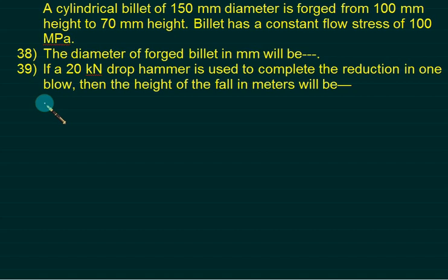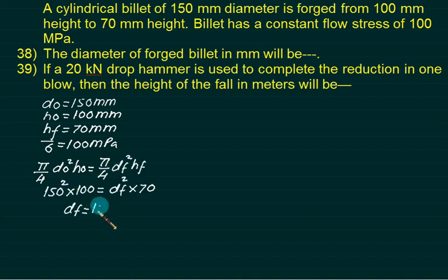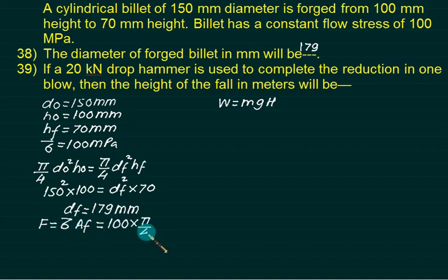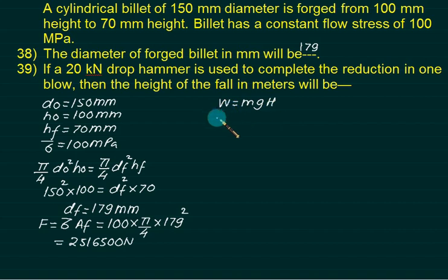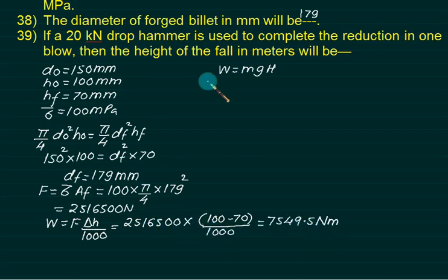Example 6: A cylindrical billet of D0 = 150 mm is forged from H0 = 100 mm to HF = 70 mm with average stress 100 MPa. Using volume conservation, DF = 179 mm. Force = 100 × (π/4 × 179²) = 2,516,500 N. Work done = F × ΔH = 2,516,500 × (30/1000) = 7,549.5 N·m. With a 20,000 N drop hammer, the height is found by equating MGH to work done.